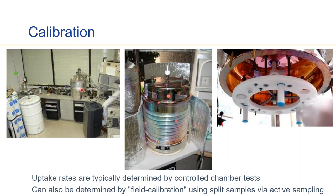Another approach is to determine a field-validated uptake rate by collecting active samples — such as a canister or sorbent tube — co-located with a passive sorbent sampler. The active concentration is then used to derive the passive sampler uptake rate. This approach can also be used to verify the performance of published uptake rates under field conditions.